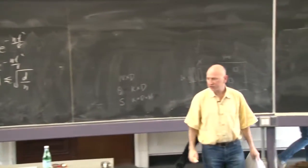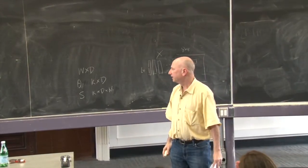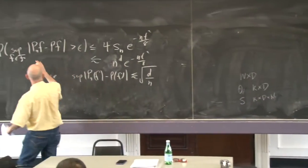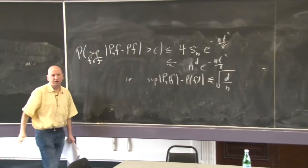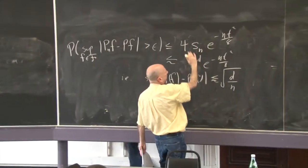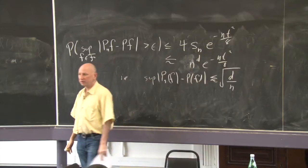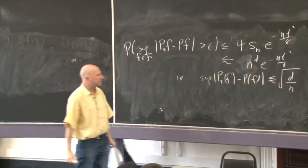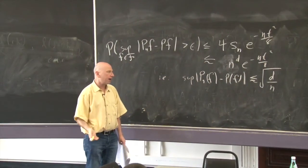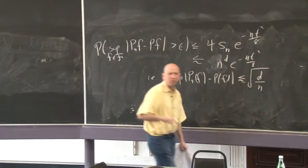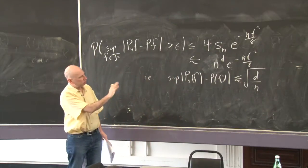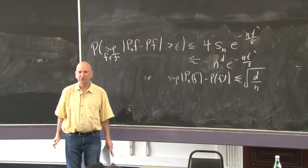Today I want to finish up concentration of measure and then start doing minimax theory. What we did last week was prove the VC theorem, which says the probability that the maximum difference between the empirical average of f and the true average of f is bigger than epsilon, was less than something involving the shattering number times something exponentially small. When the class had finite VC dimension, this was roughly n to the d times that thing. With high probability, setting this equal to delta, the maximum deviation is of order root d over n, where d is the VC dimension.